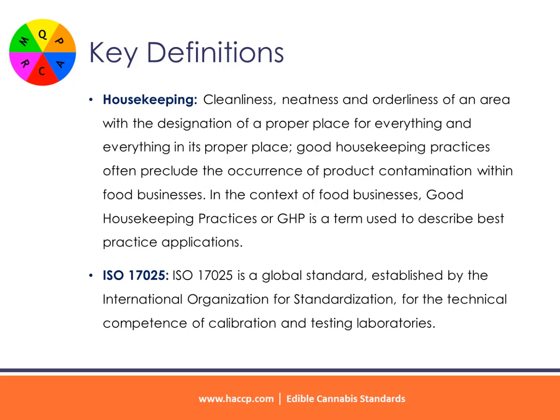In the context of edible cannabis products, homogeneity refers to the consistent uniform distribution of cannabinoids throughout a finished product. Housekeeping: cleanliness, tidiness, and orderliness of an area, with the designation of a proper place for everything and everything in its proper place. Good housekeeping practices often preclude the occurrence of product contamination within food businesses.